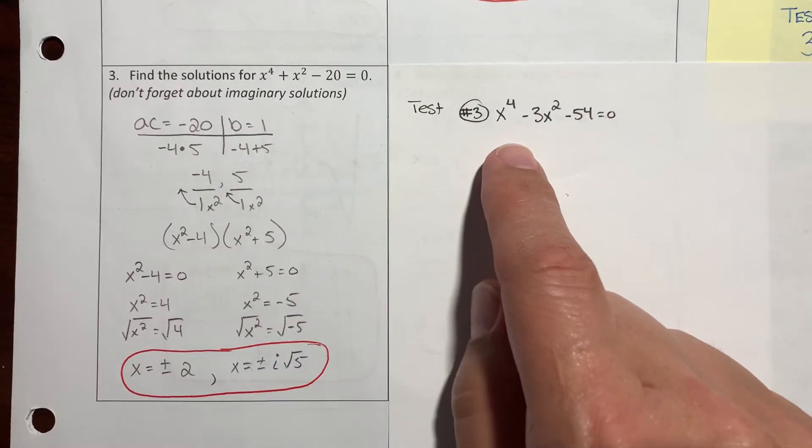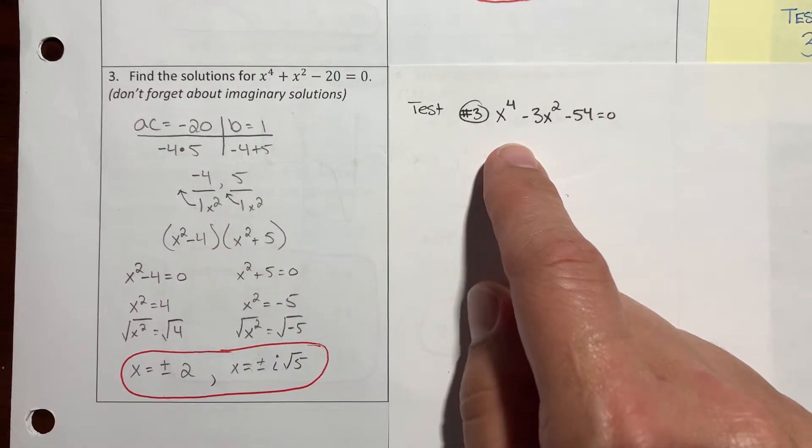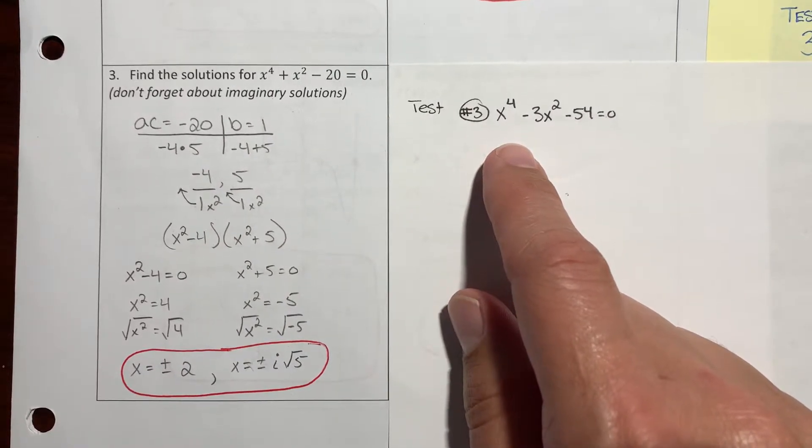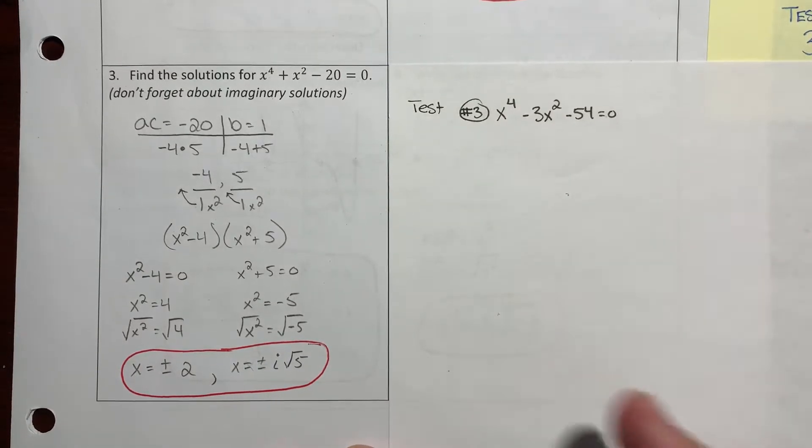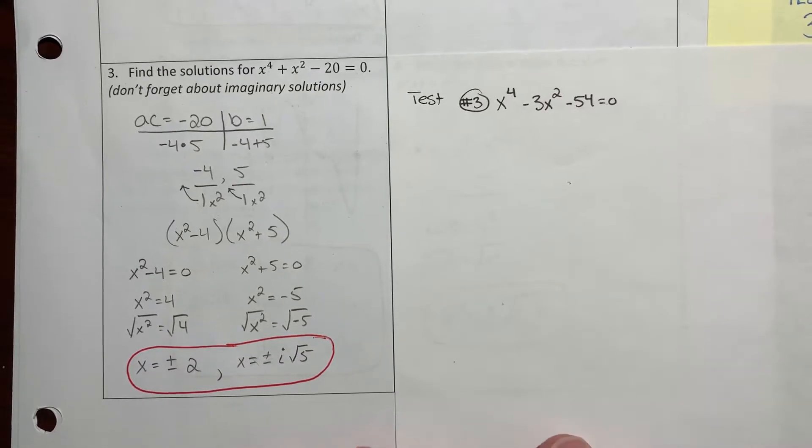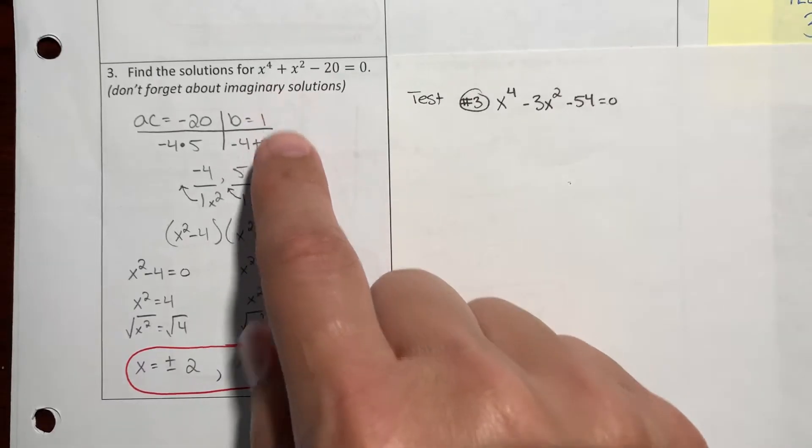On the study guide it says find the solutions, where in the test it says which of the following answer choices is not a solution. So basically, to figure out which one is not a solution, work it out to find the actual solutions and then pick the one that's not on the list.